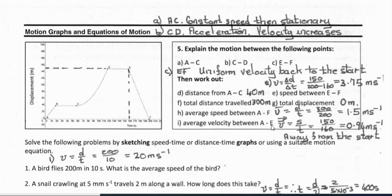The average velocity between A and E — average velocity rather than speed — is total displacement divided by time. The object has gone out 150 meters and done that in 160 seconds to reach point E. So the average velocity in one direction is 150 divided by 160, which is 0.94 meters per second.